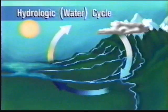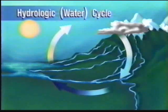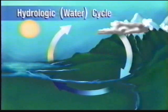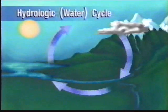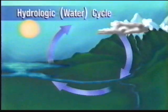The rain and snow run off the land into rivers, lakes, and oceans. Then the whole process begins again.